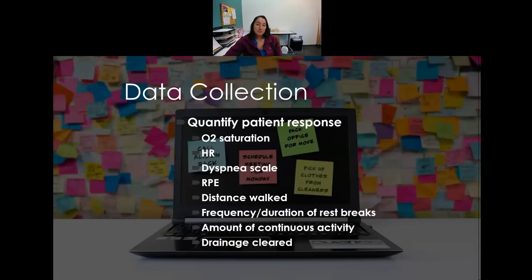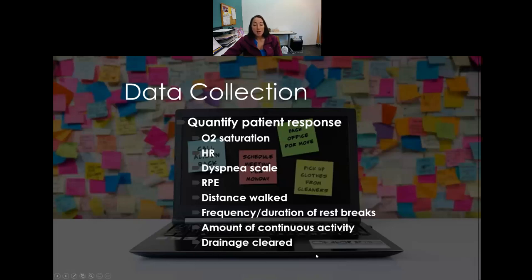To document the patient's response in the SOAP note, monitor and record: oxygen saturation, heart rate, dyspnea scale rating, RPE scale rating, distance walked or duration of exercise, frequency and length of rest breaks, and airway drainage clearance. These measurements show the patient's current status and track progress over time.